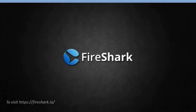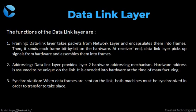Now we will discuss the functions of the data link layer. Framing is the most important function. The data link layer takes packets from the network layer, encapsulates them into frames, and sends each frame bit by bit on the hardware. At the receiver end, the data link layer picks up signals from hardware and assembles them into frames.